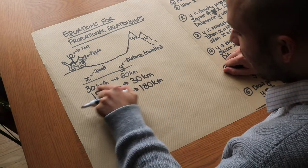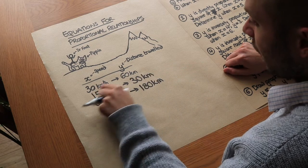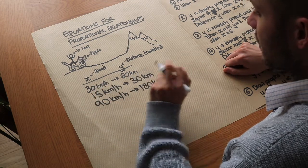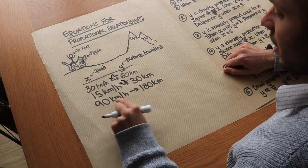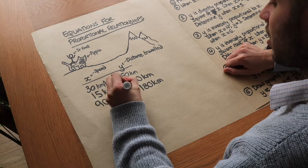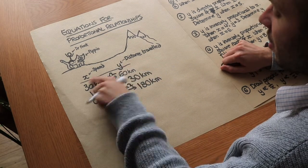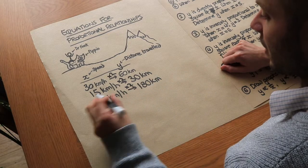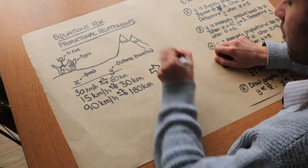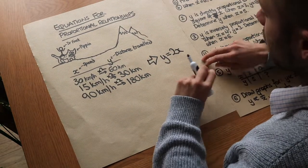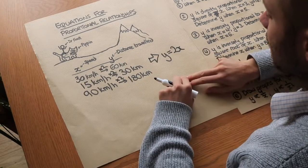You may notice that we have the same scale factor between speed and distance in each case. If I multiply the speed by 2 I happen to get the distance — 15 to 30 that's times by 2, 90 to 180 that's times by 2. So we could express the distance traveled y in terms of the speed x: the distance traveled is 2 times the speed. This video is all about working out equations for proportional relationships.